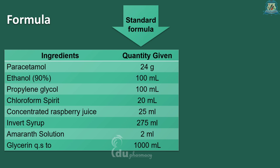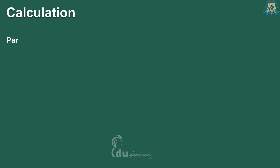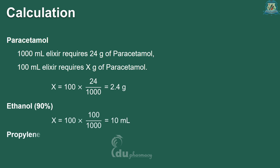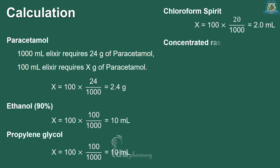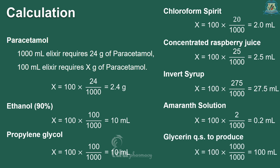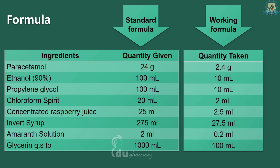Here you can see a given formula for 1000 ml. We need to calculate the quantity of each ingredient for 100 ml. Here is the working formula.